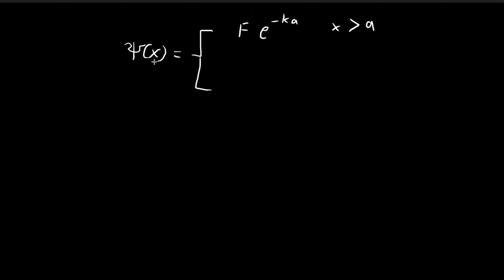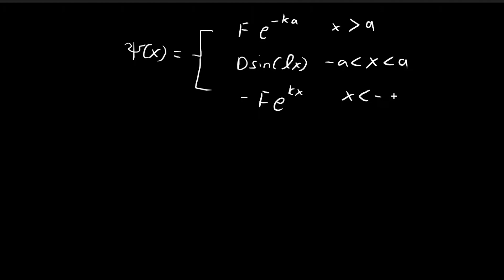The rest of the solutions come in the form where ψ(x) is an odd function. You can check for yourself that this expression satisfies the Schrödinger equation for the three regions: x > a, between negative and positive a, and x < -a. You can also verify that ψ(x) is indeed an odd function by checking whether f(-x) = -f(x).